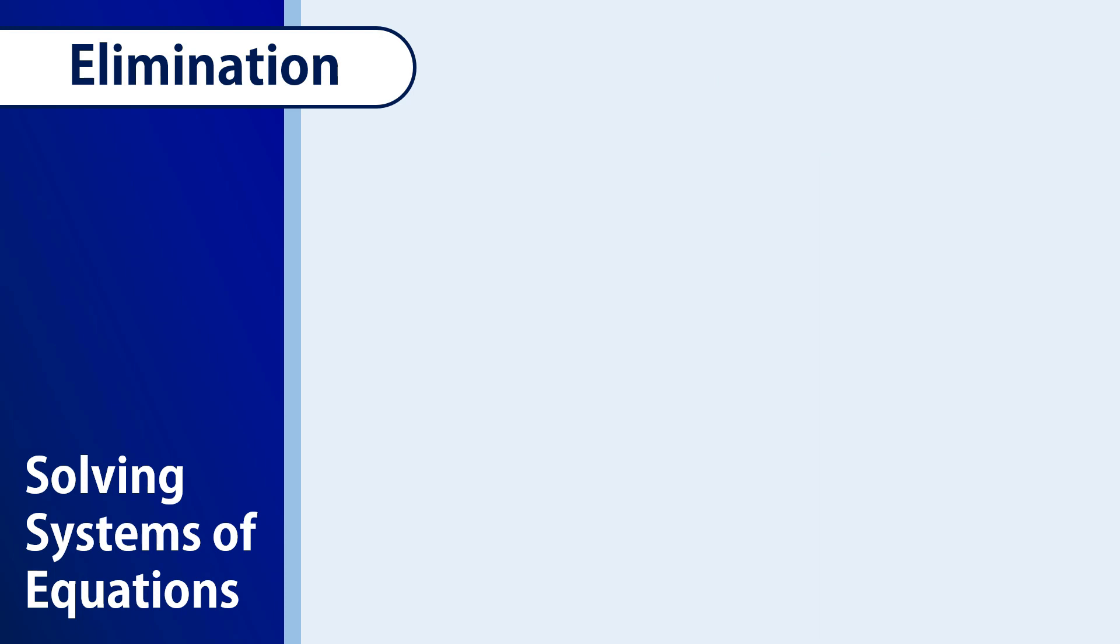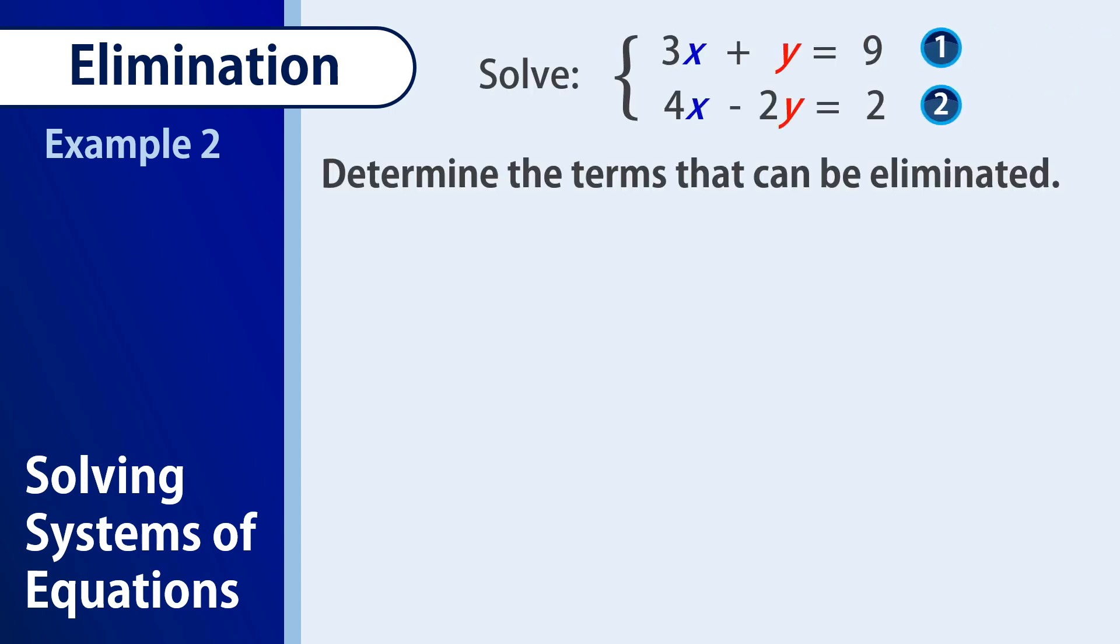Let us examine this second example if there are any terms we can eliminate. Are there? There aren't because our variables x and y have different coefficients. For x, we have 3 and 4. For y, we have 1 and negative 2.